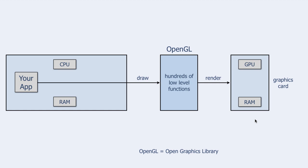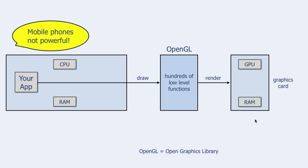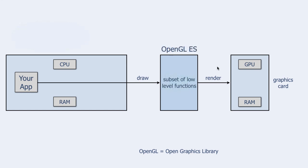The next problem came when mobile phones like the iPhone were introduced. They were not as powerful as computers, so something called OpenGL ES was introduced. ES stands for Embedded Systems, and OpenGL ES is a subset of OpenGL.